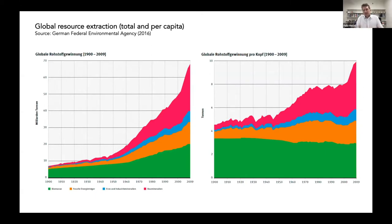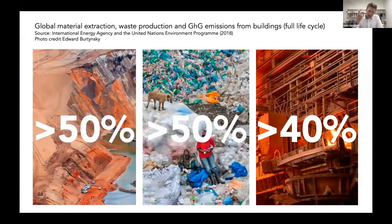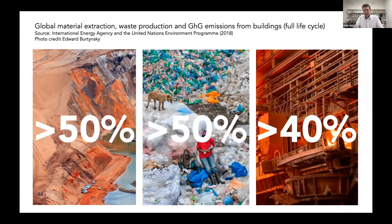It's important to show both graphs because you might say we have more people on the planet, so of course we need more building materials. But also every person needs more materials — a similar curve. The built environment in total, operational and embodied emissions over the full life cycle of buildings, accounts for more than 50% of resource extraction globally, more than 50% of solid waste production globally, and at least 40% of CO2 emissions. We as architects and engineers have an incredible role to play in this paradigm shift.